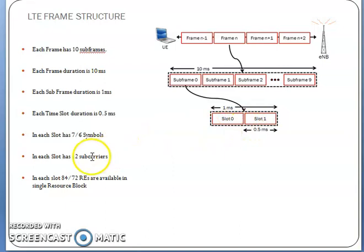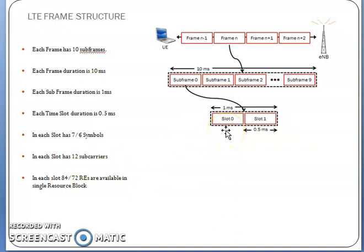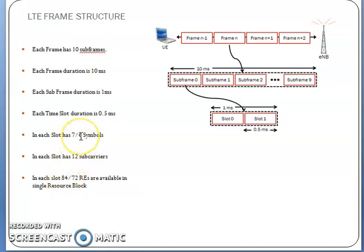If you are using normal cyclic prefix, there are 7 OFDM symbols per slot. If using extended cyclic prefix, there are 6. Each slot has 12 subcarriers. One slot equals 84 resource elements — calculated as 12 subcarriers × 7 symbols = 84. If using extended CP, then 12 × 6 = 72 resource elements in a single resource block.